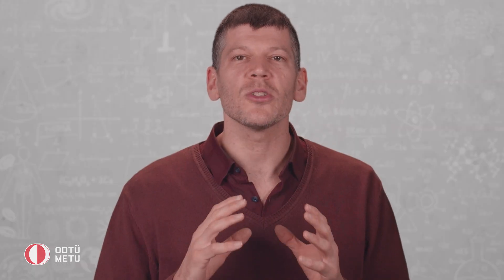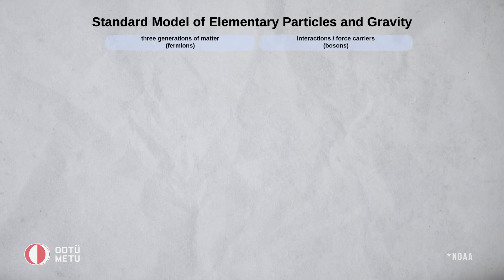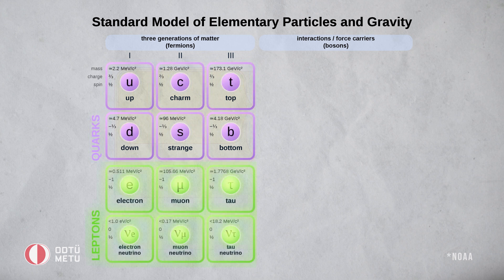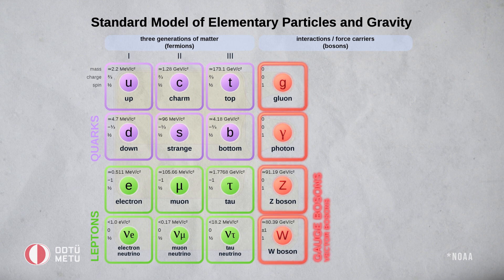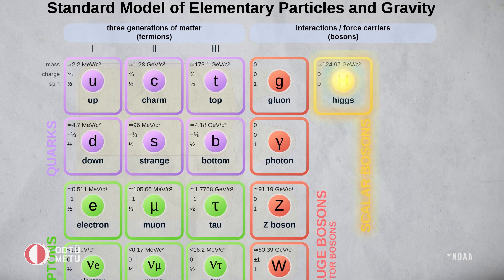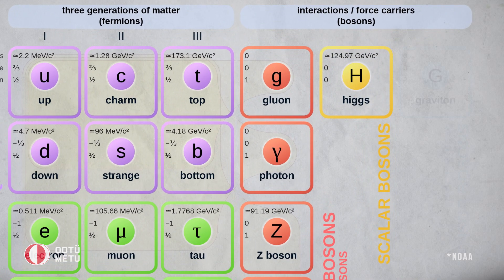In elementary particle physics, we have an established theory that provides a complete description of the particles and their interactions, and it's called the Standard Model. The Standard Model has been very successful in providing accurate predictions for essentially all particle physics experiments carried out so far. Since it was proposed in 1964, the Higgs boson has remained the final missing particle of the Standard Model. Any proof that the Higgs field did not exist would imply that the Standard Model was incorrect.